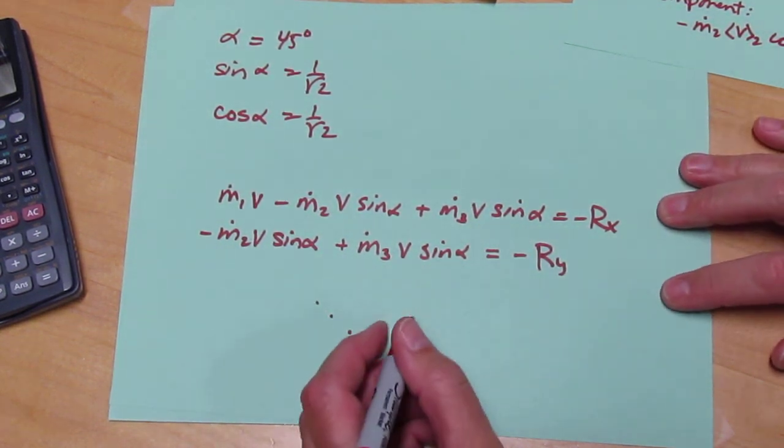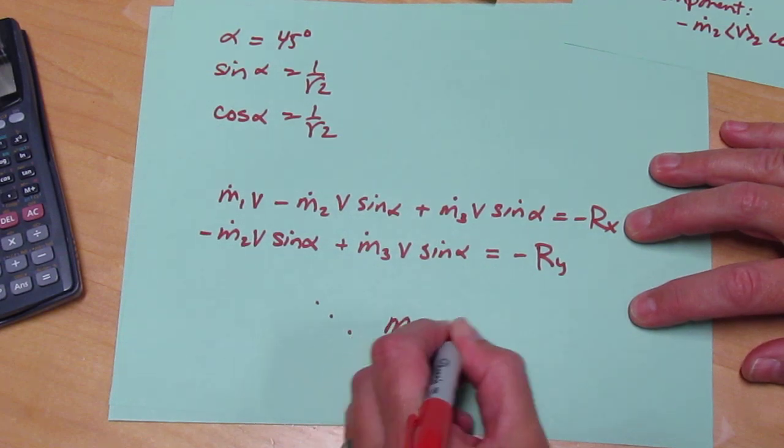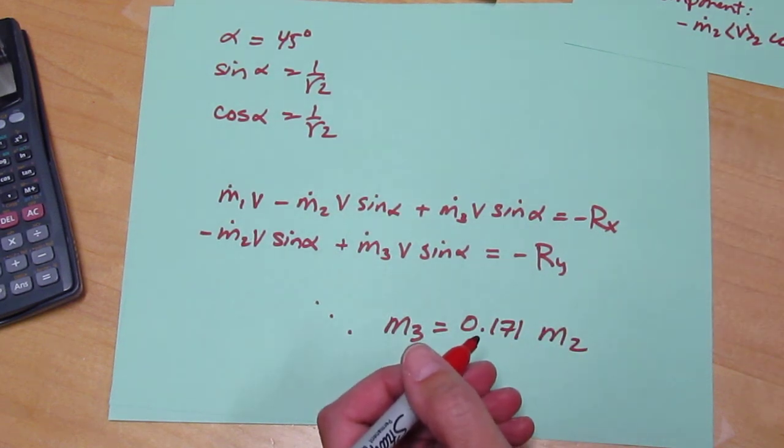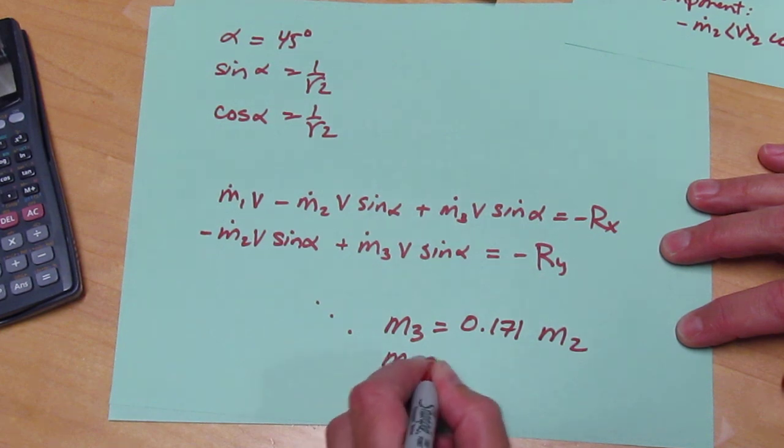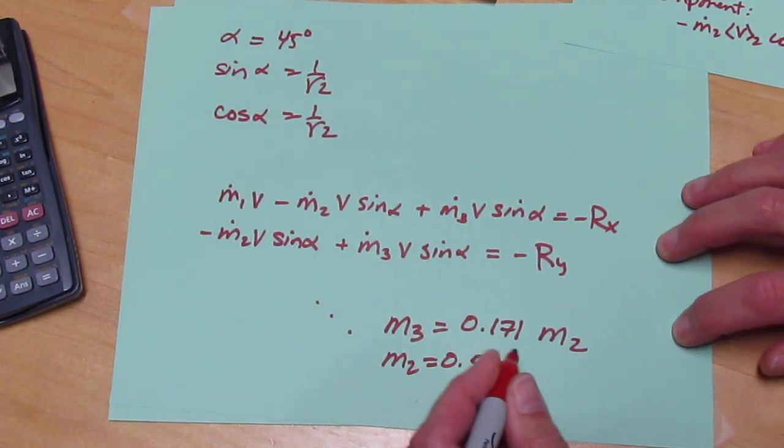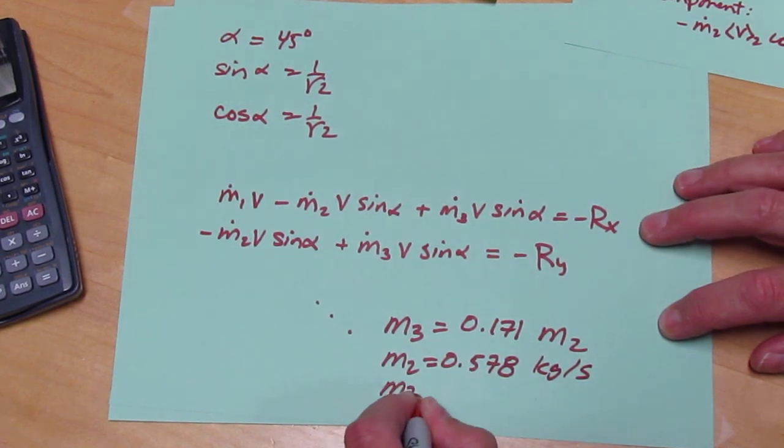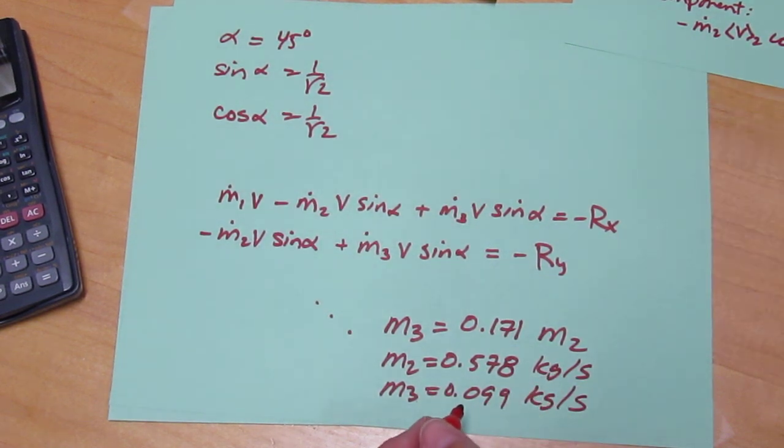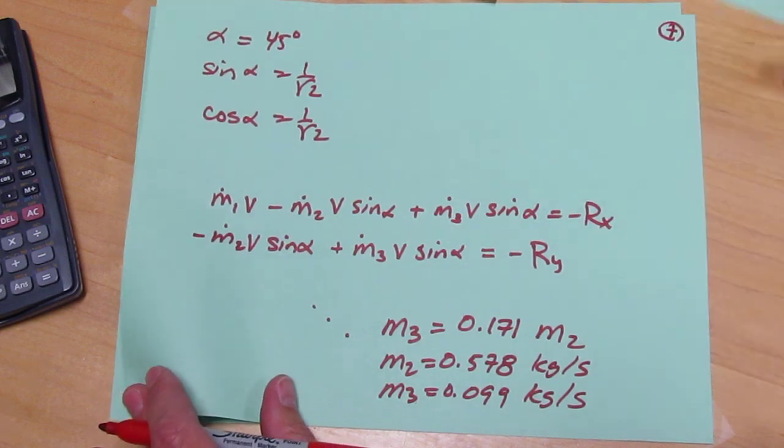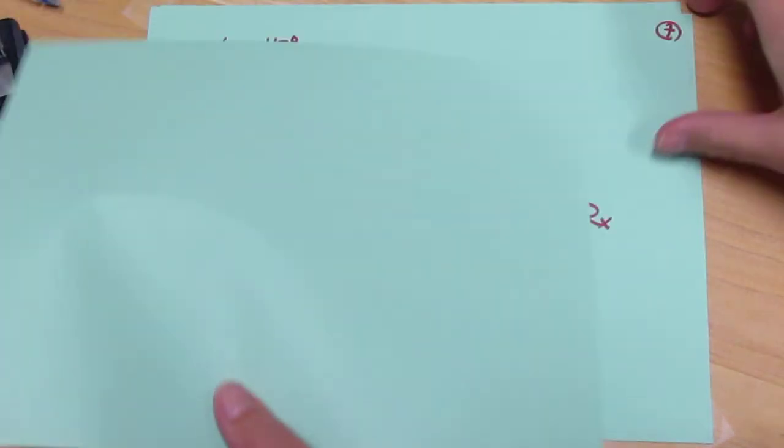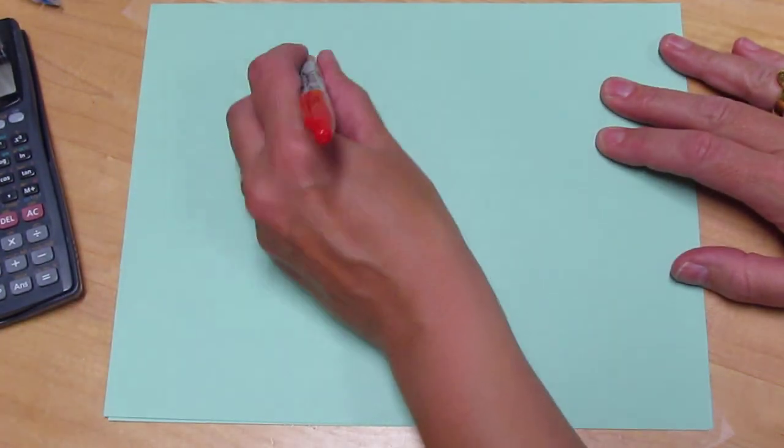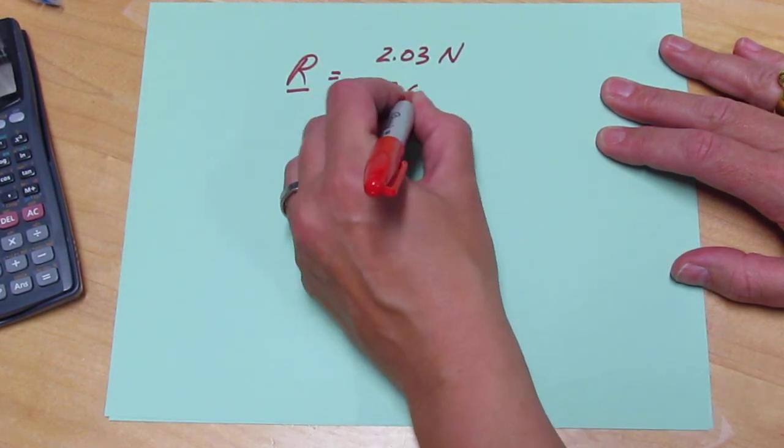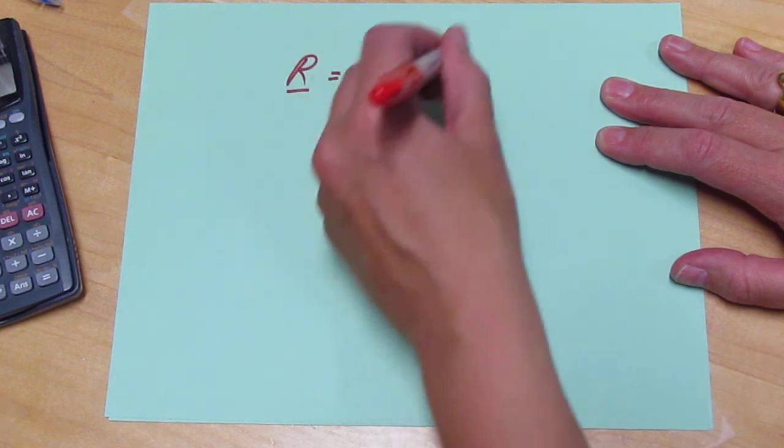So, the final result turns out to be that M3 is equal to 0.171 M2, and therefore M2 is equal to 0.578 kilograms per second, and M3 is equal to 0.099 kilograms per second, and the final vector for the force is given by R equals 2.03 newtons, minus 2.03 newtons, zero, XYZ.